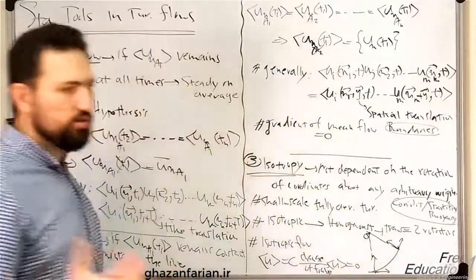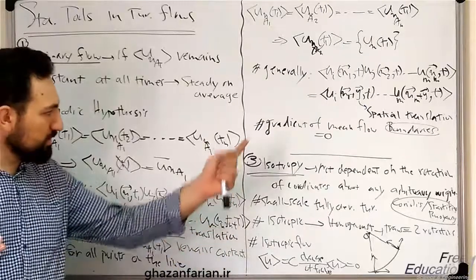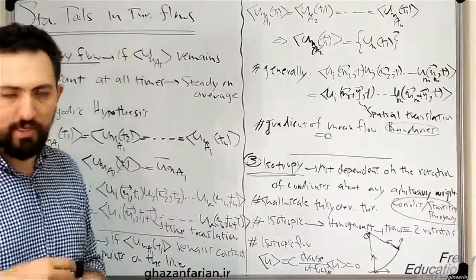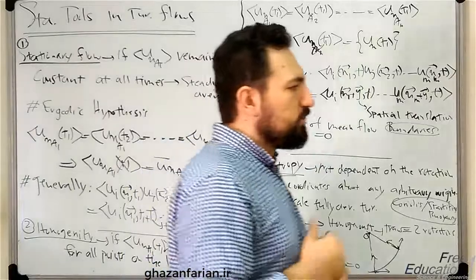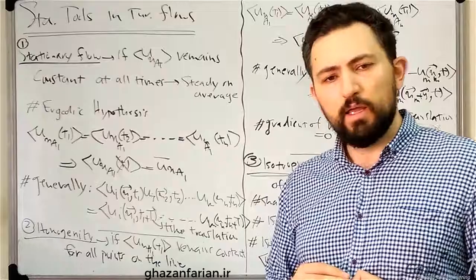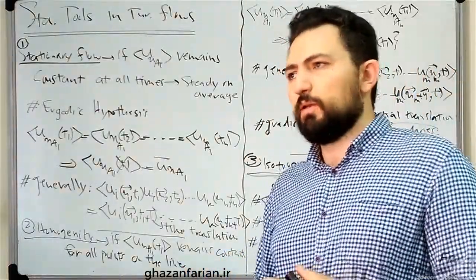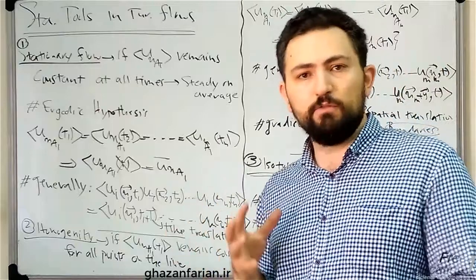This is a spatial translation. This one was time translation. This one is a spatial translation. Again, it means that the result of ensemble average is independent of the position or invariant or insensitive to the variation or translation of position.